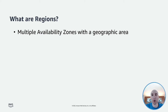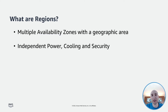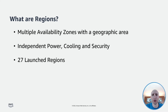Unlike other cloud providers where you often define a region as a single data center, the multiple AZ design of every AWS region offers advantages for customers. Each availability zone has independent power, cooling, and physical security, and is connected via redundant, ultra-low latency networks. AWS infrastructure regions meet the highest levels of security, compliance, and data protection.